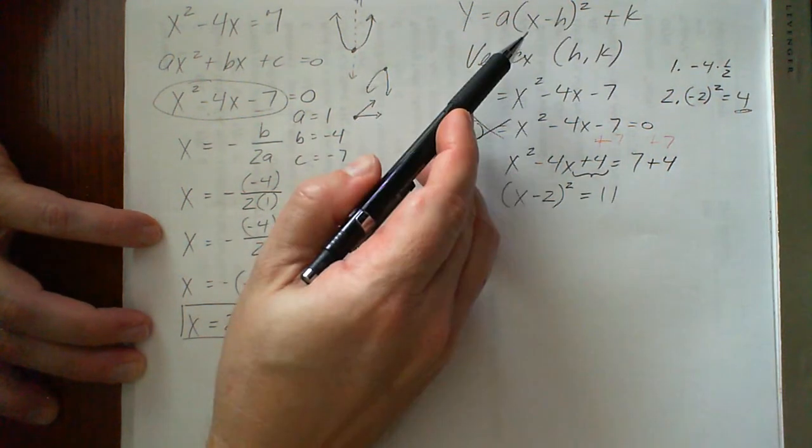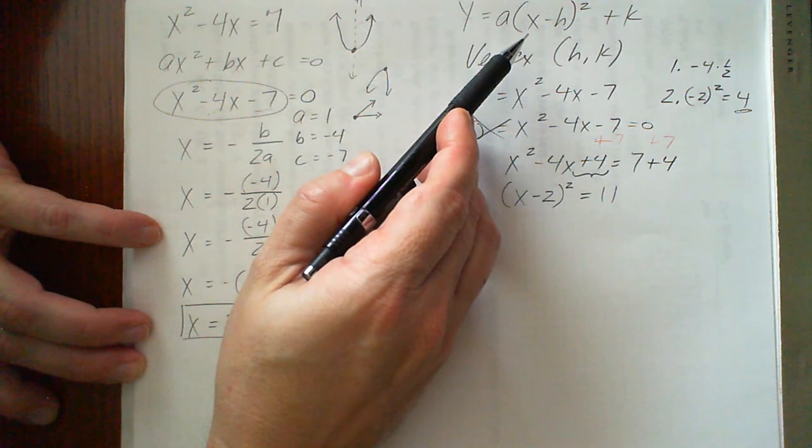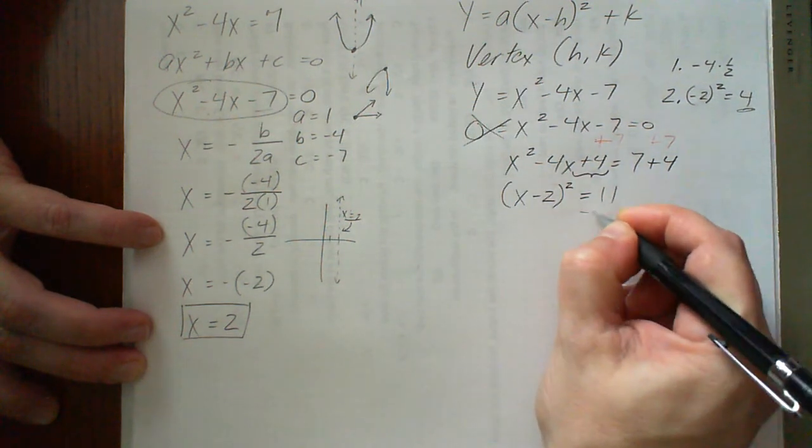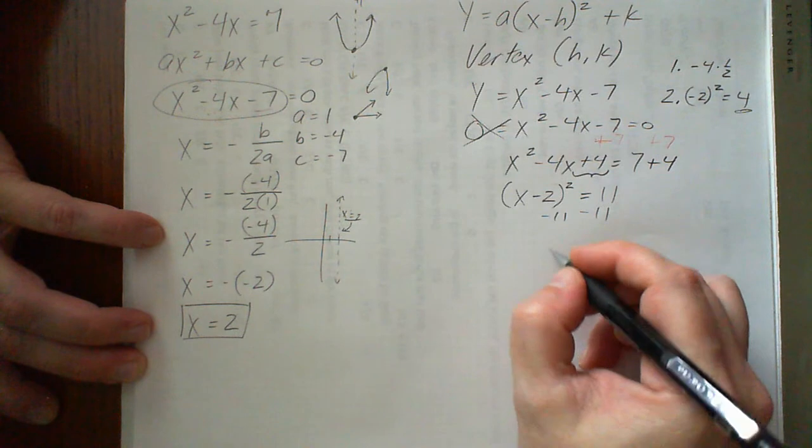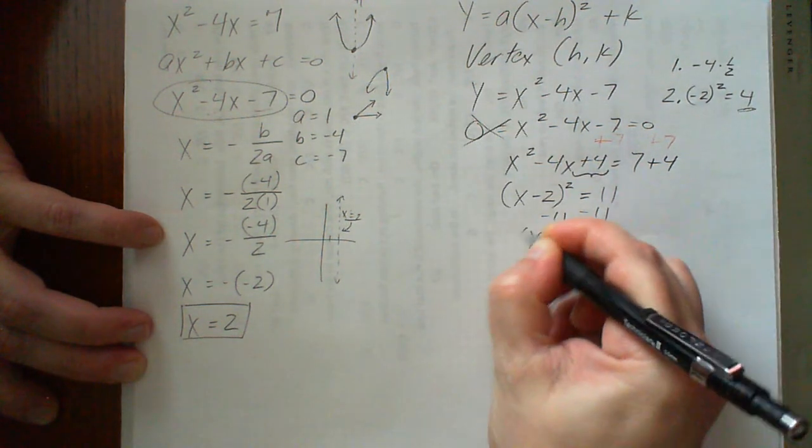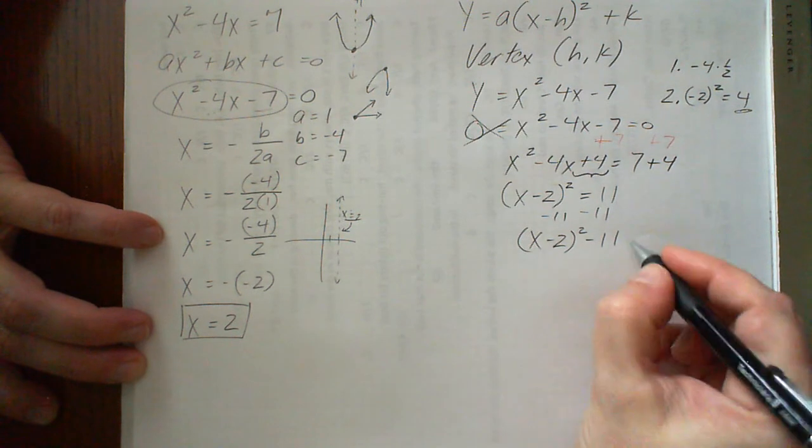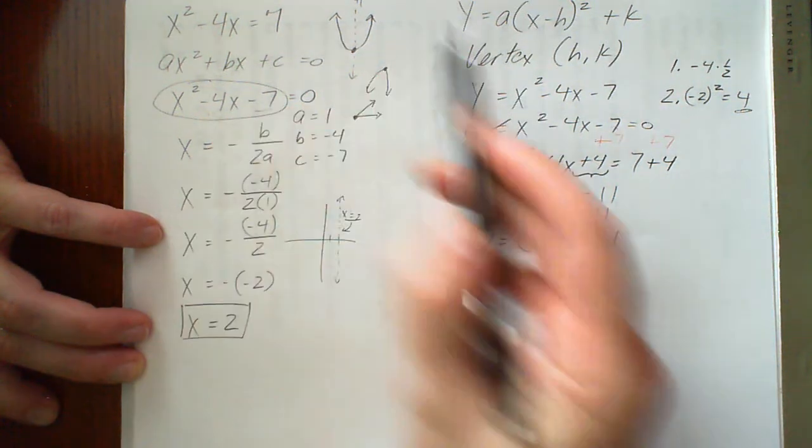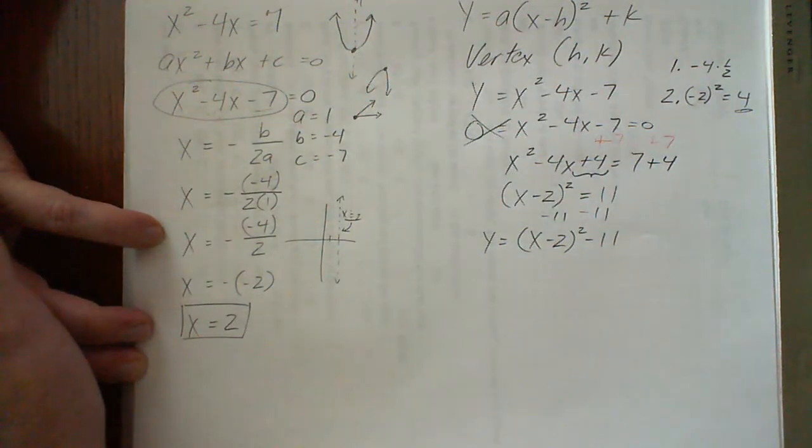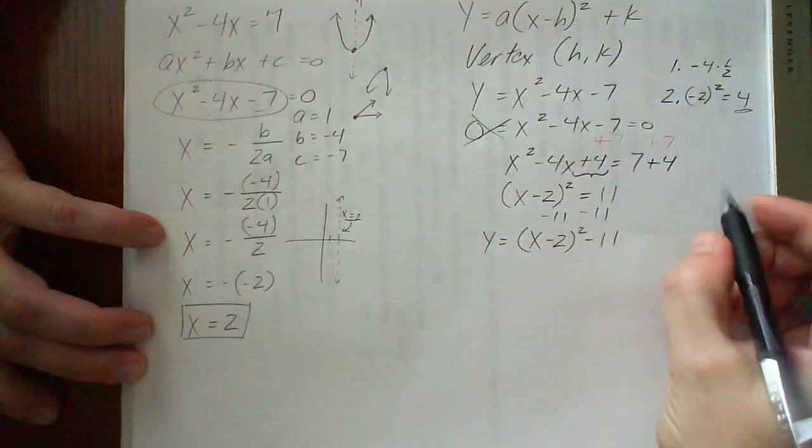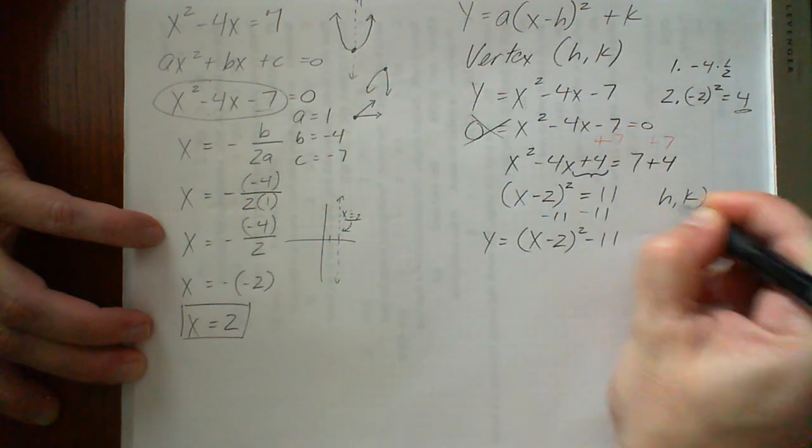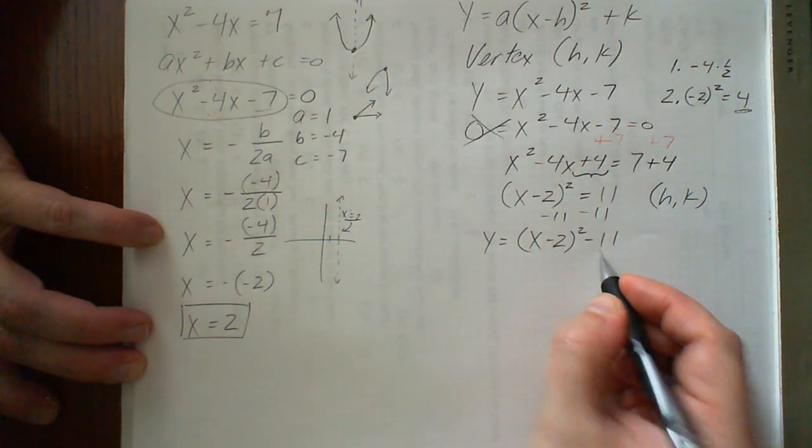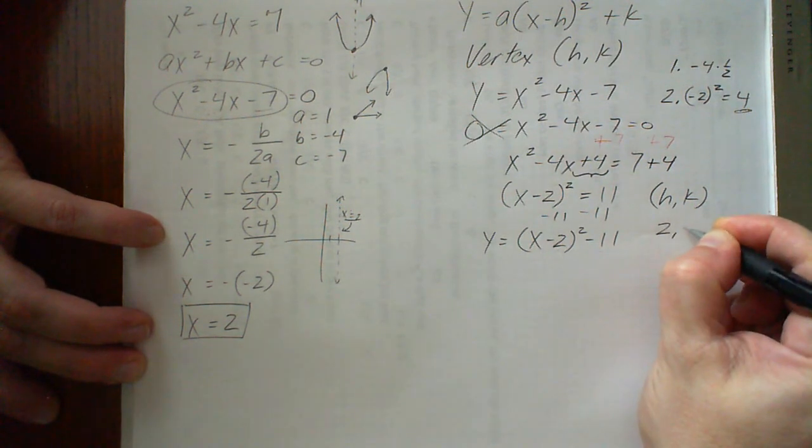Now this still doesn't look exactly like my general form up here. I need to say y equals and then have something. This doesn't quite look like that, so we do need to get this 11 back over here. We can do that by subtracting the 11. That's going to leave us with x minus 2 squared minus 11. I could say equal to 0 or 0 equals, but in this case I want it to say y equals just so it will be exactly like my general form here. Now remember, our vertex is h comma k. In this case our h value you can see here is 2. And our k value is negative 11. So our vertex here is 2 comma negative 11.